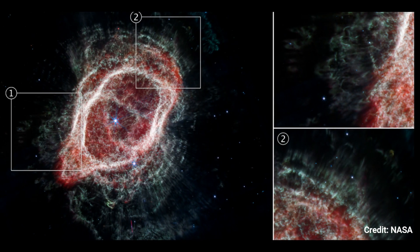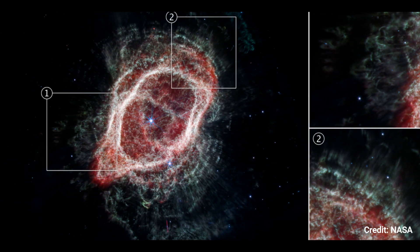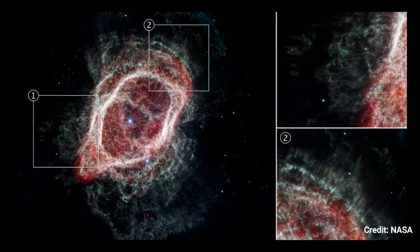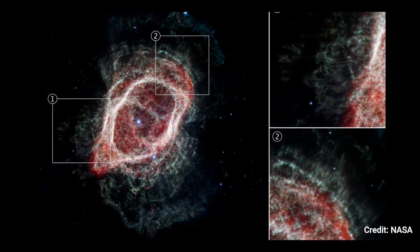Some of the stars' ejections followed thin, straight lines through the gas and dust. Others appear twisted, curved, and bulkier. Why?